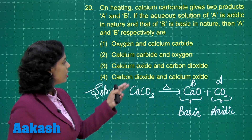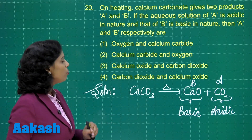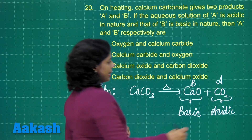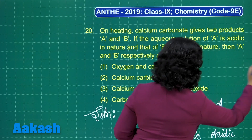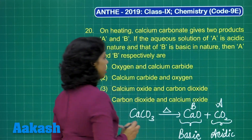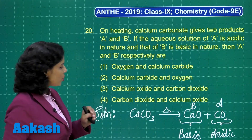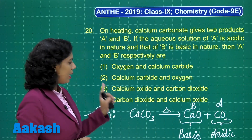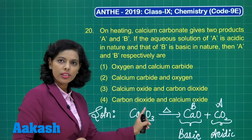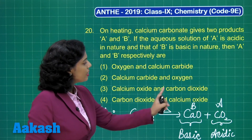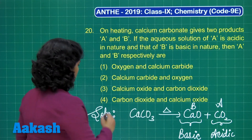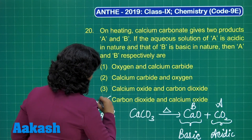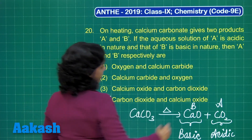On the basis of this, we find the correct answer. You can clearly see A is carbon dioxide and B is calcium oxide. Definitely option 4 is the correct answer.